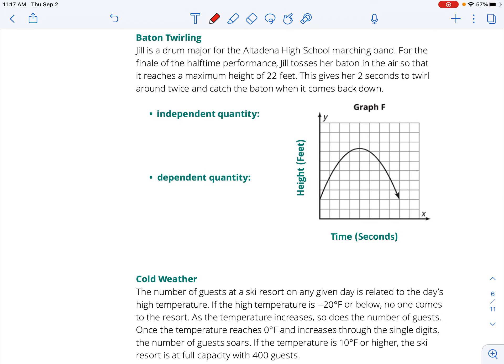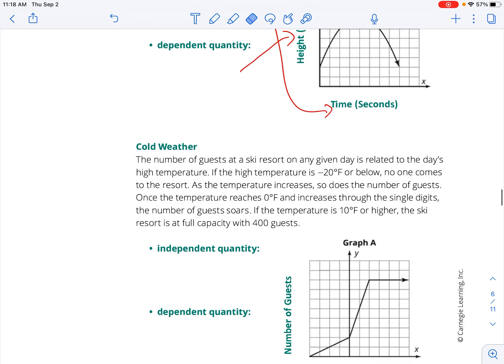Baton twirling. We toss the baton up into the air, and as time goes by, it says Jill has an opportunity to do two twirls in two seconds. And then the baton comes down, and she catches it right there. So graph AF is modeling that. The time, as time goes by, the baton goes up in the air. That is why we call it the height, which is in terms of feet.